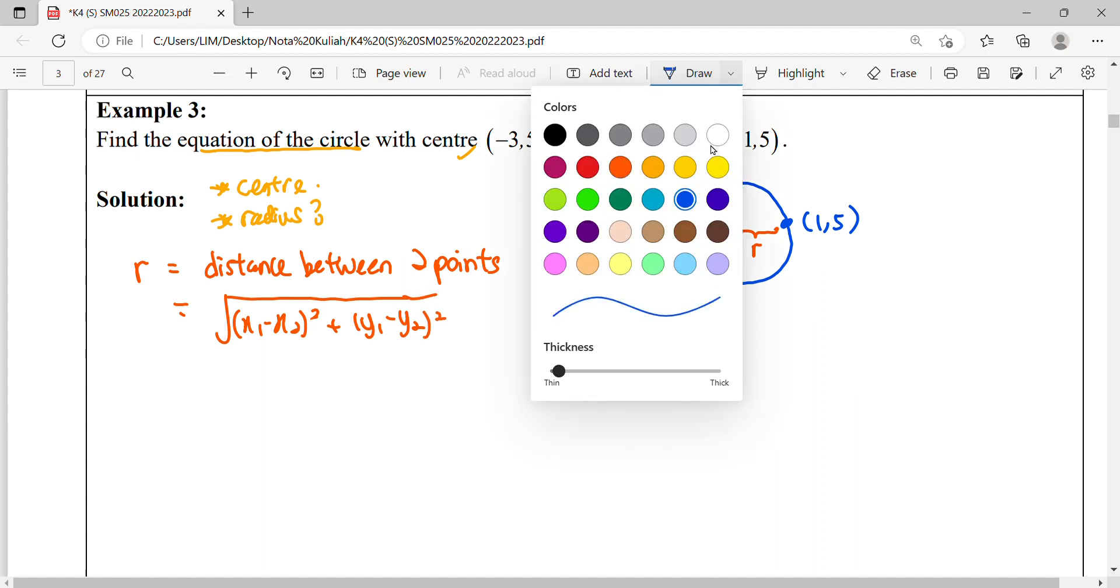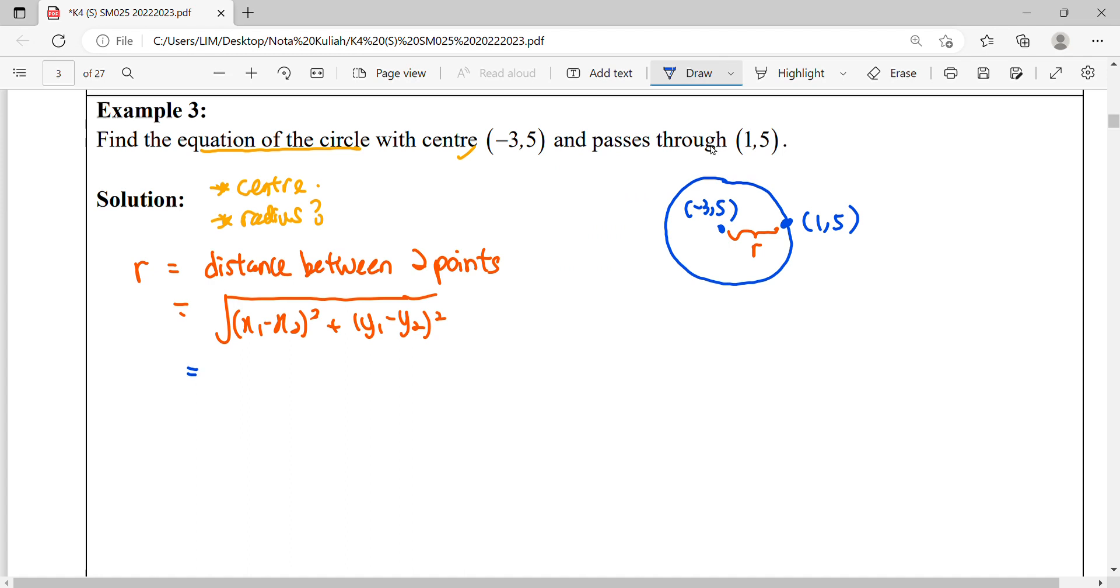So for this question, we're going to take the x coordinate from center minus the point, and y coordinate 5 minus 5. So we get the radius equals 4. Now our information is complete where center is given and radius is found.